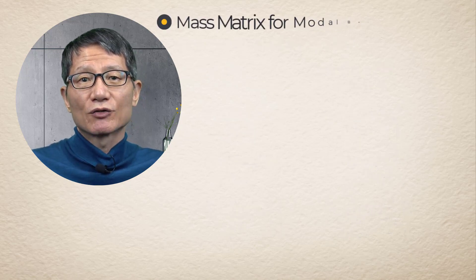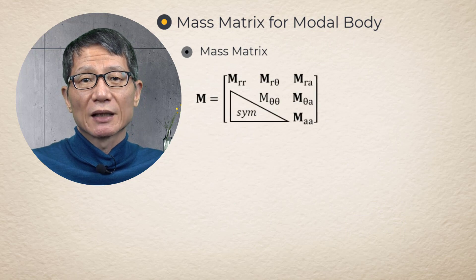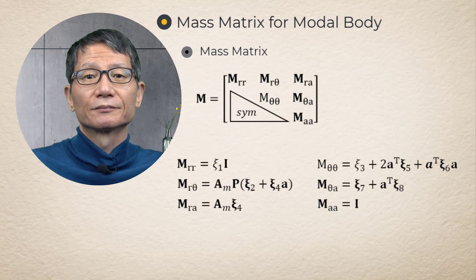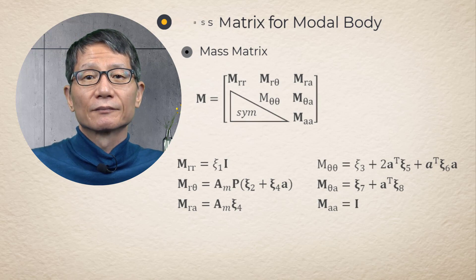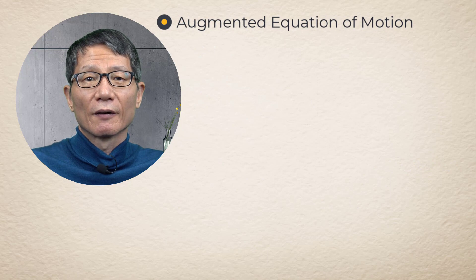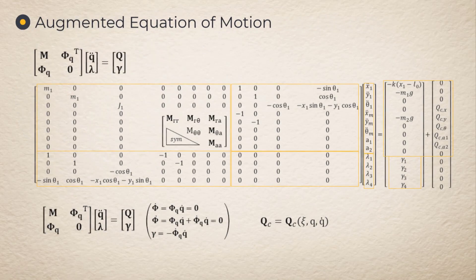Mass matrix for modal body. The mass matrix is obtained as follows. Augmented equation of motion. Finally, the augmented equation of motion for this example are obtained as follows.